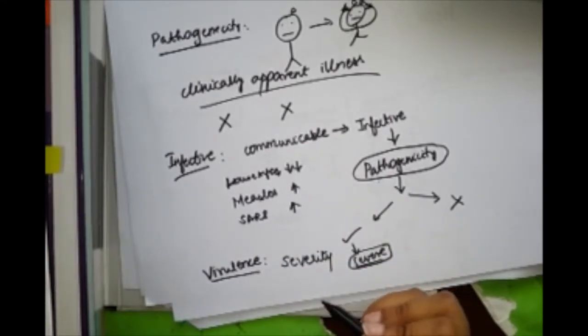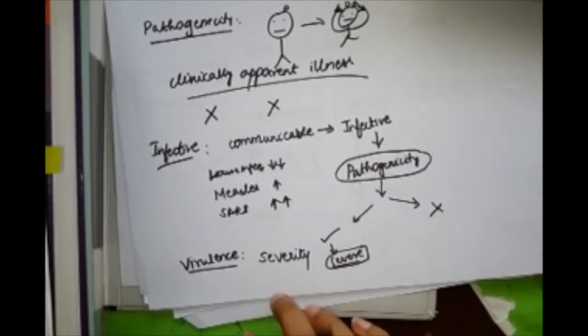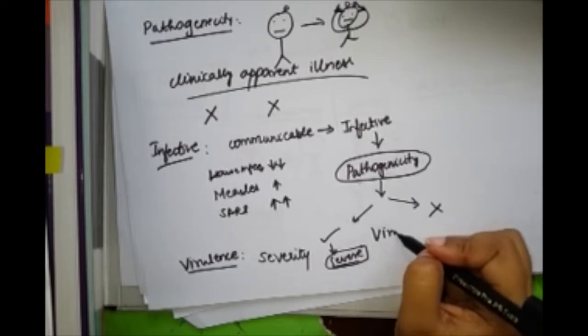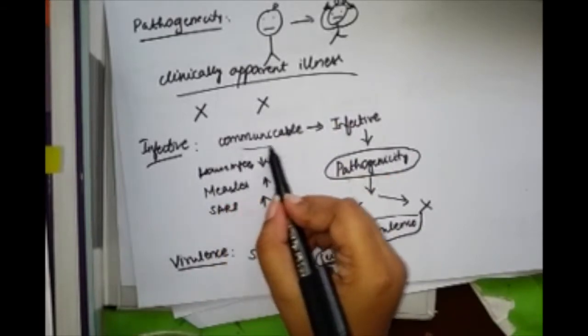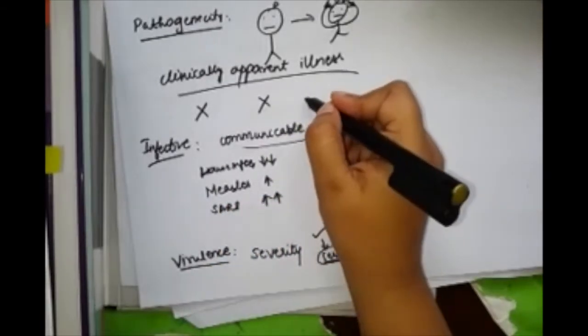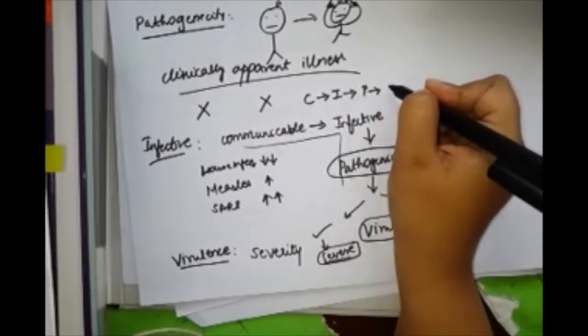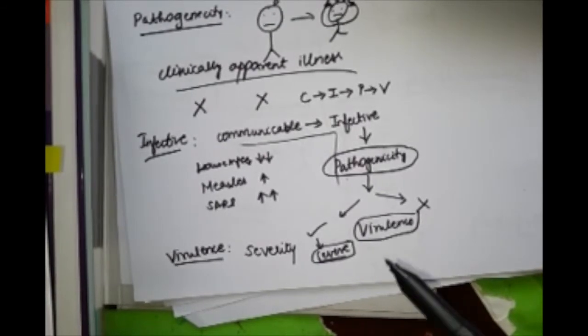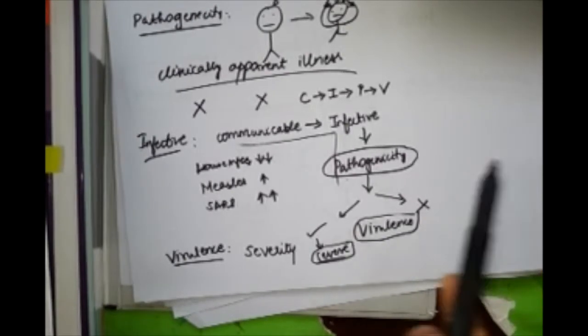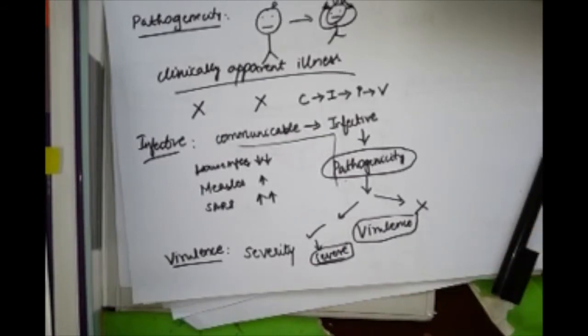Virulence is the ability to cause severe cases. After pathogenicity, your last step will be virulence. To simplify things, remember you can remember this in alphabetical order: first is communicable, next is infective, next is pathogenicity, next is virulence. I'll be coming up with the next video on serial interval, generation time, incubation period, and all the stuff. I hope this video was helpful. All the best for your exams.